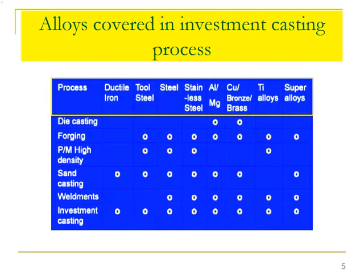Along with this, we can see that not all metals and alloys can be processed in other casting and manufacturing methods. In investment casting, you can cast ductile iron, tool steel, steel, stainless steel, aluminium, magnesium and its alloys, copper, bronze, brass alloys, titanium alloys, and super alloys. Virtually all metals and alloys can be cast using the investment casting process — this gives it unique importance among all casting and manufacturing processes.